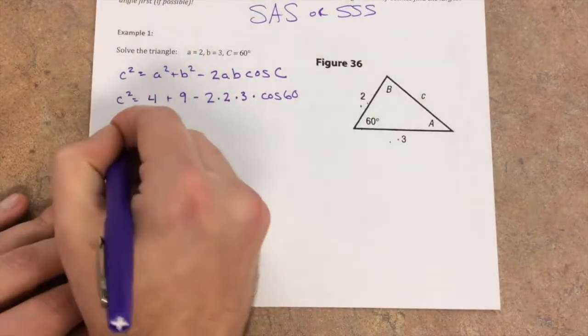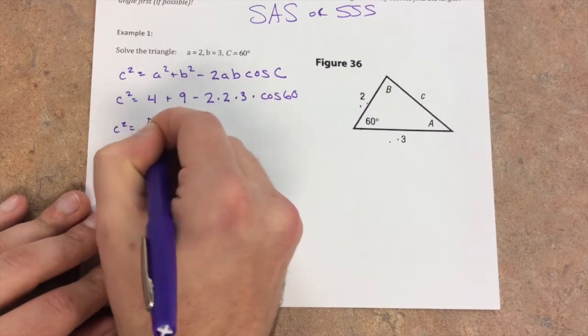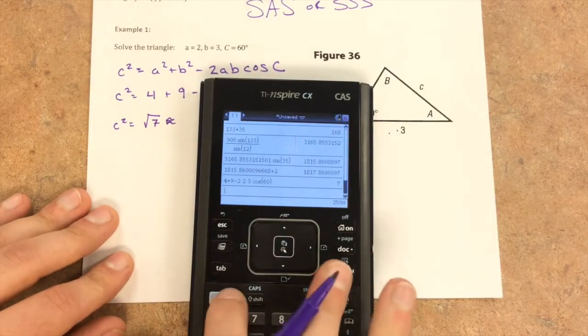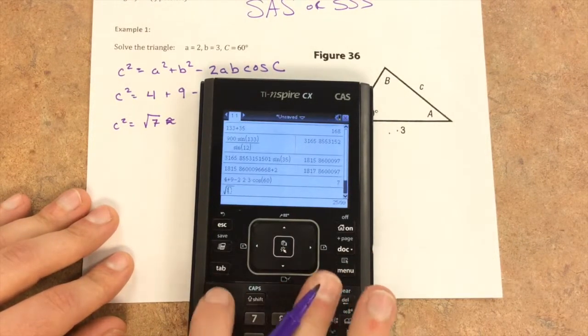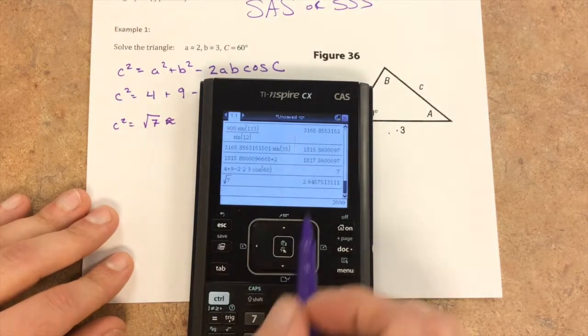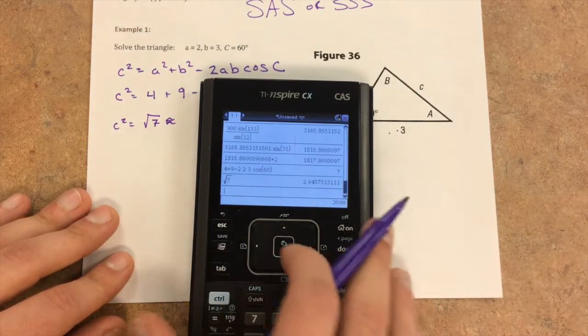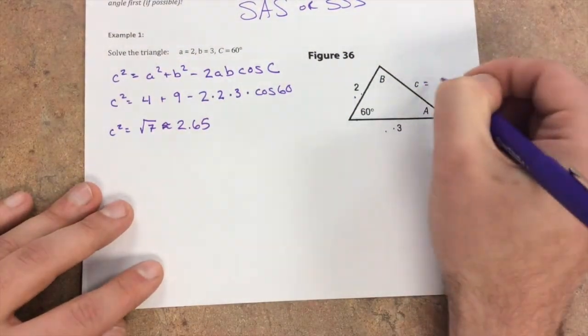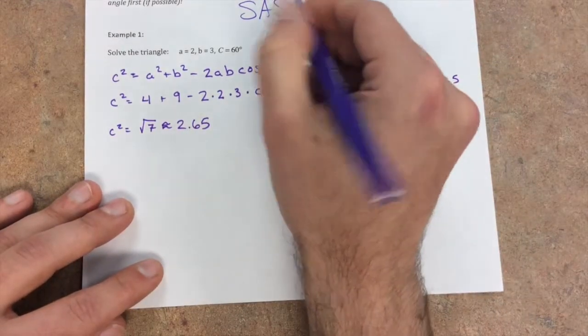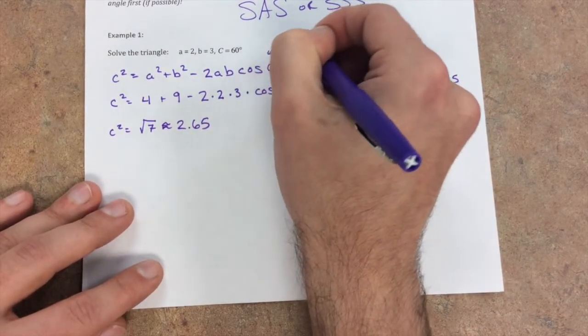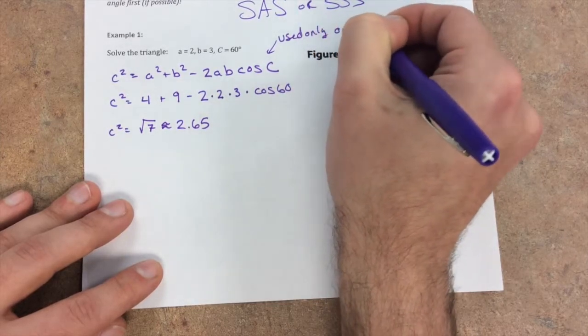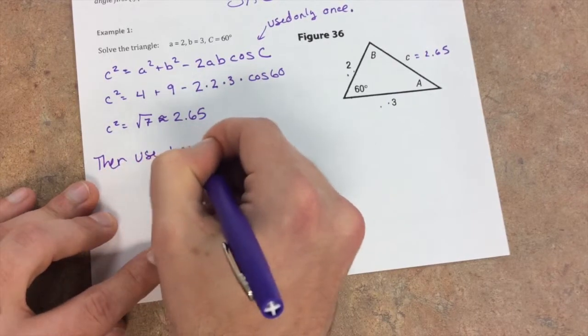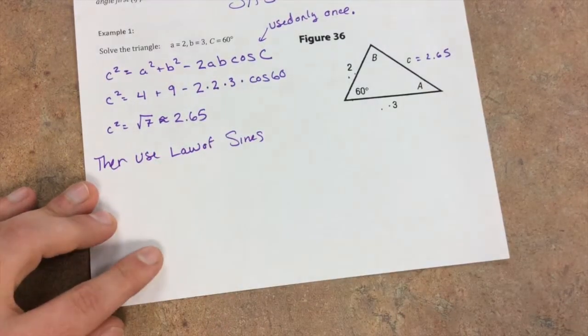So I get C squared equals the square root of 7, which I'm going to just approximate for us. The square root of 7 is about 2.65. If this is 2.65, we only need to do this once. Then use law of sines. Now we can do law of sines.